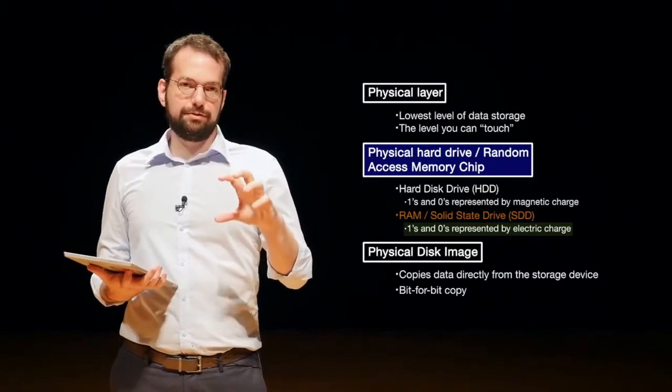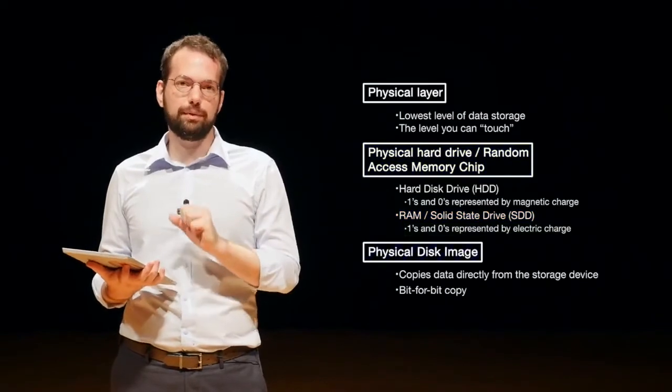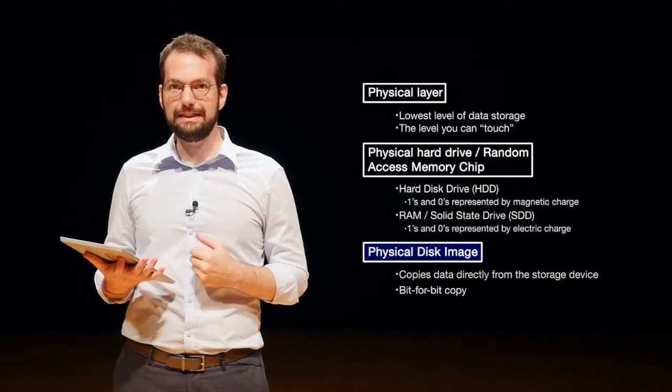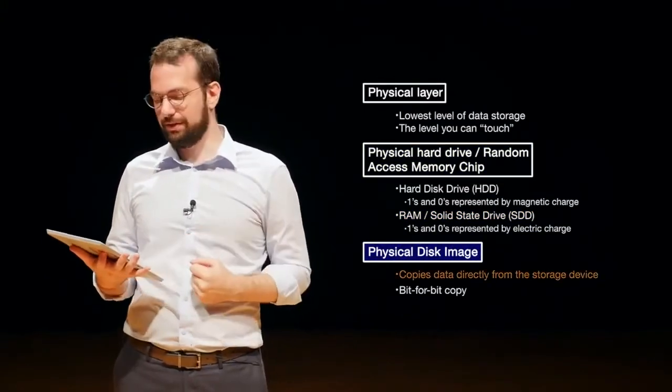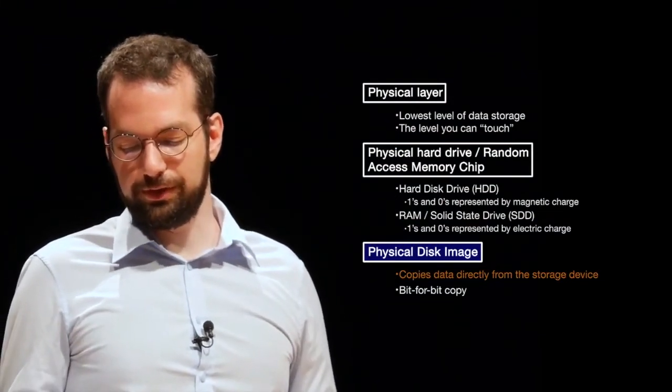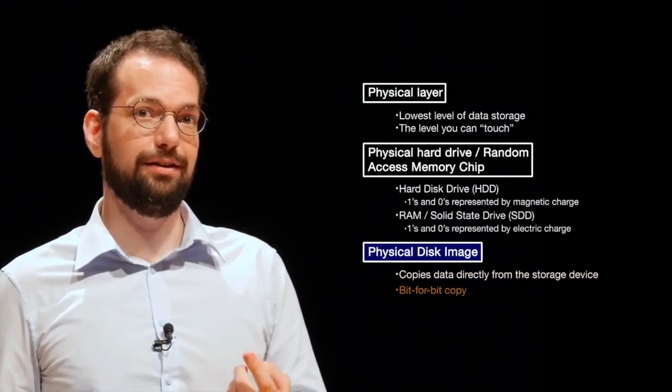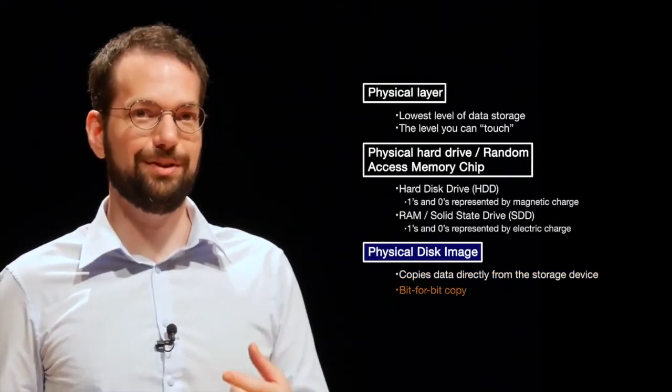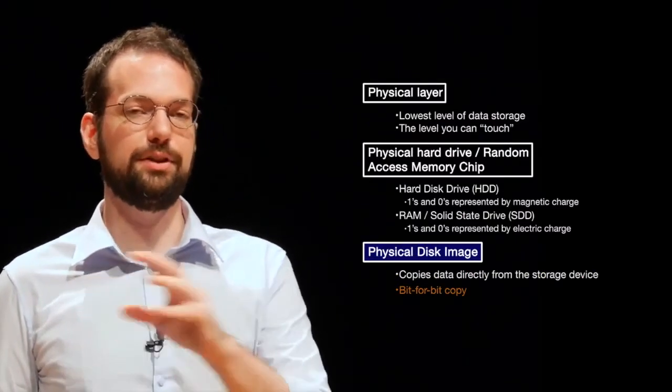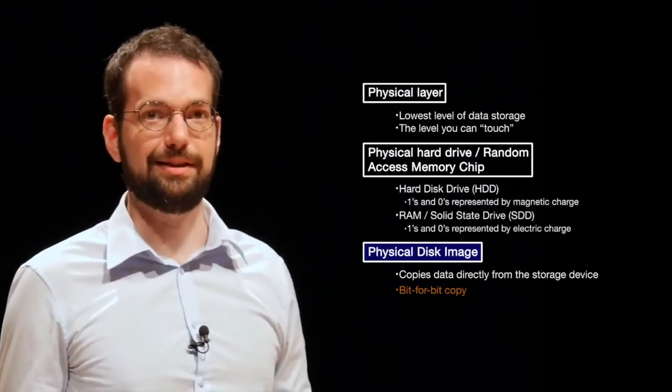From these physical devices, we create for forensics something called a physical disk image. It's essentially copying the data directly off of the physical disk and making a representation of it, which we'll talk about and we'll actually do this week. It copies the data directly from storage device, and we say it is a bit-for-bit copy because one one or zero is what we call one bit. So for every bit that is on the physical storage, it will make an exact copy of that.